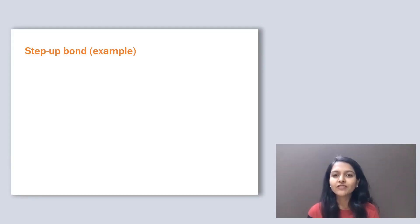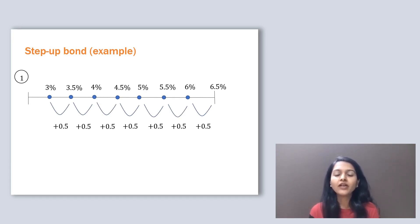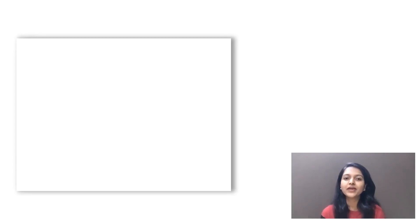Now the structure of this bond is such that suppose there is a step up bond having an initial coupon rate of 3% which increases by 0.5% each year. Or it can also be like coupon rate is 5% for the initial 3 years and later it increases to 7% for the remaining 5 years.